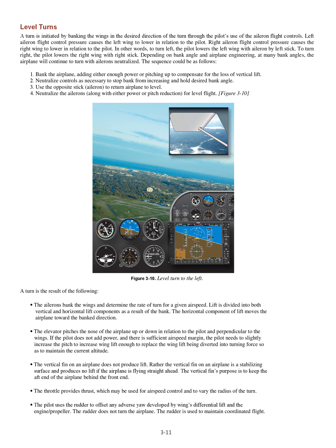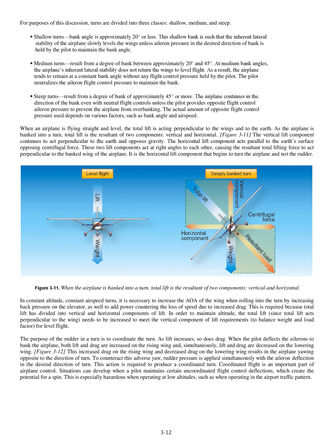The throttle provides thrust, which may be used for airspeed control and to vary the radius of the turn. The pilot uses the rudder to offset any adverse yaw developed by the wing's differential lift and the engine/propeller. The rudder does not turn the airplane; the rudder is used to maintain coordinated flight. For purposes of this discussion, turns are divided into three classes: shallow, medium, and steep.